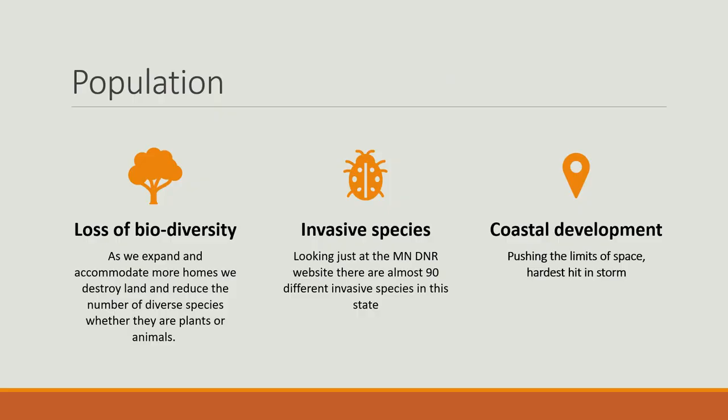We also have an issue with population. We have a loss of biodiversity — as we expand and accommodate more homes, we destroy land and reduce the number of diverse species, whether plants or animals. We also spread invasive species. Just looking at the Minnesota DNR website, there are almost 90 different invasive species in the state of Minnesota alone. We also do coastal development, pushing the limits of our space, and those areas are the hardest hit in a storm.